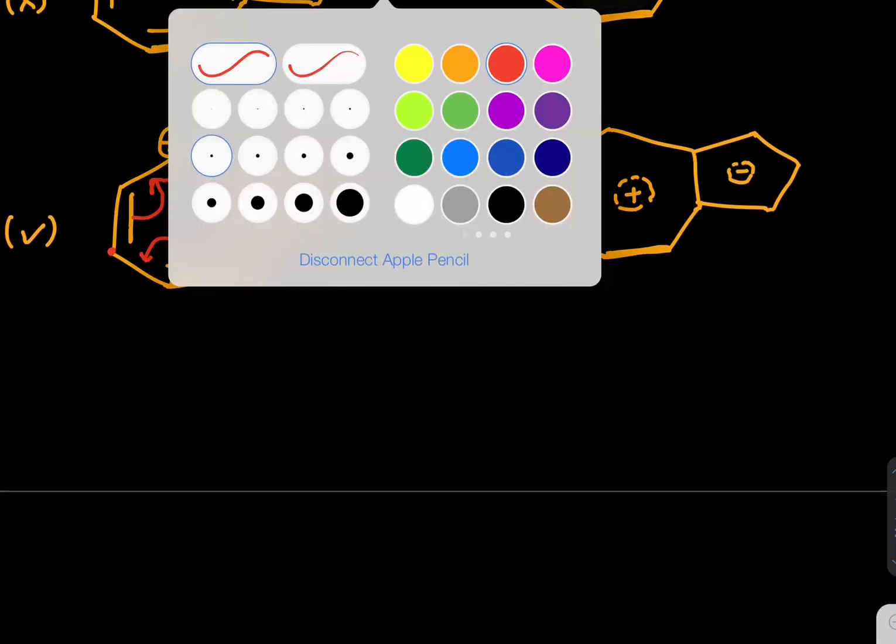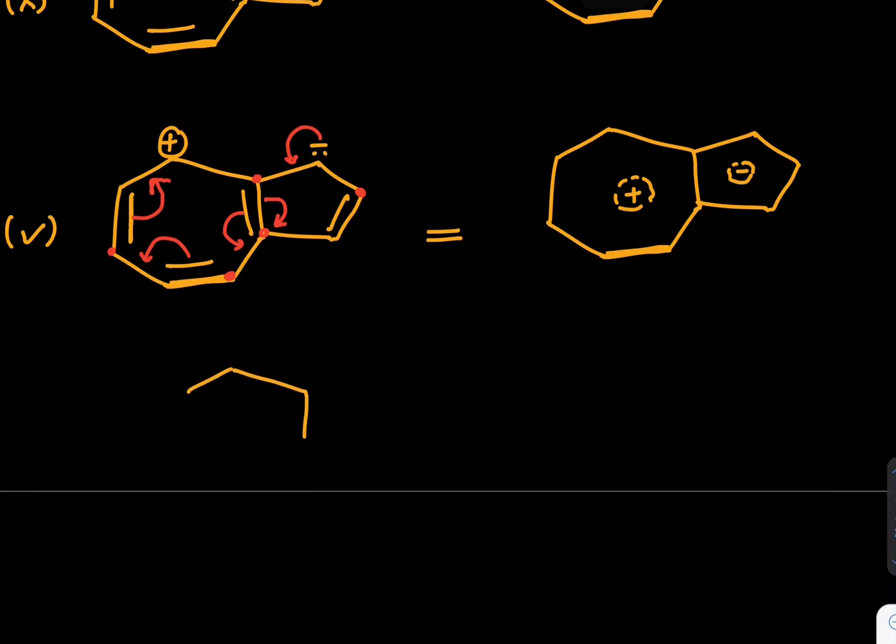Or if you have doubt, you can revise that if we draw separately seven member ring like this, it was tropelium carbocation, it was stable. So we have six pi electrons moving inside cyclic structure, everything is sp2 hybridized, hence we concluded this was aromatic.